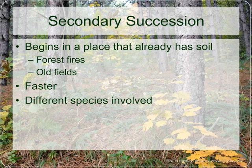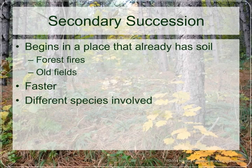Since secondary succession can be seen as jumping into the middle of primary succession, we talk about different pioneer species. Whereas in primary succession the pioneer species are things like lichens and mosses, in secondary succession we're talking about weeds, wildflowers, and shrubs and small trees.